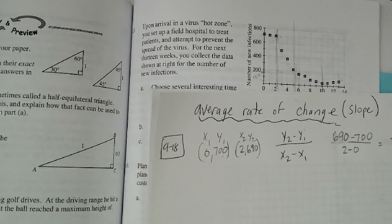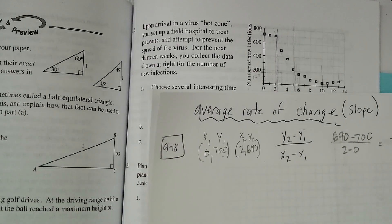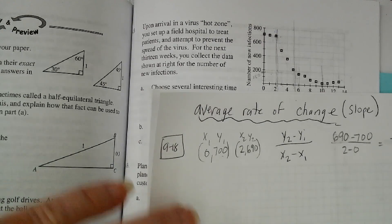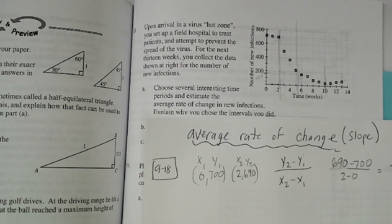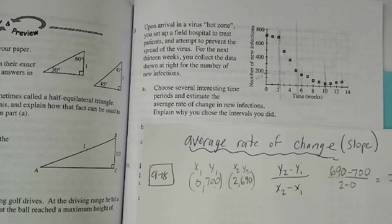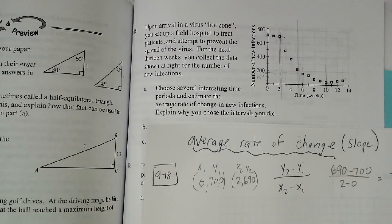Here's Integrated 3, problem 9-18. It says, upon arrival in a virus hot zone, you set up a field hospital to treat patients and attempt to prevent the spread of the virus. For the next 13 weeks, you collect the data shown at right for the number of new infections. Choose several interesting time periods and estimate the average rate of change in new infections. Explain why you chose the intervals you did.